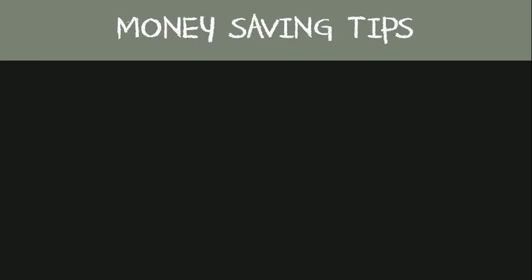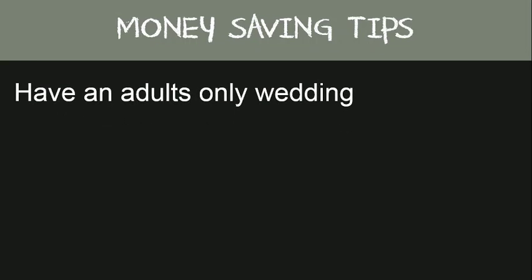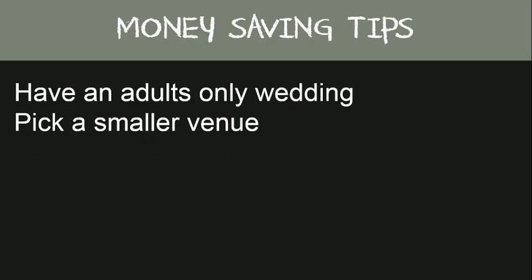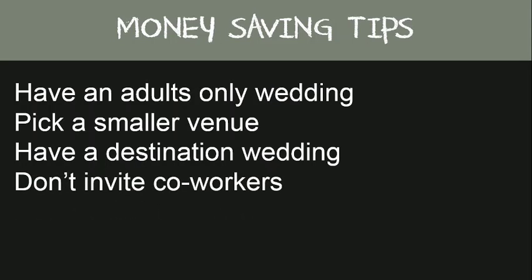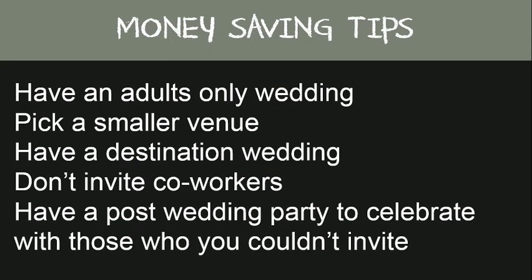Here are some money-saving tips. If you're on the fence about inviting children, make it an adult-only wedding. If you choose a smaller venue, the less occupancy you will have and the smaller your list will be forced to be. Depending on the time of year, a destination wedding would probably only be attended by your A-list. The first category to eliminate when on a tight budget is co-workers. And you could always choose a smaller, more intimate wedding, then throw a not-so-over-the-top post-wedding party to celebrate with anyone you couldn't invite.